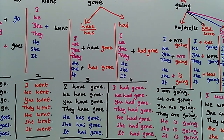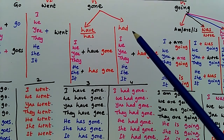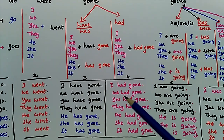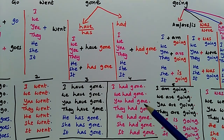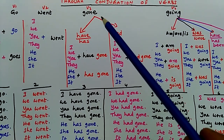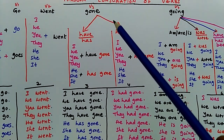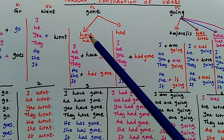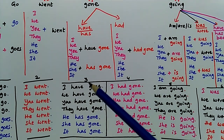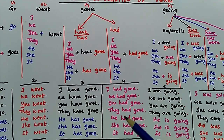For verb three 'gone': I have gone, we have gone, you have gone, they have gone, he has gone, she has gone, it has gone. And another table using had — had is the same for all pronouns: I had gone, we had gone, you had gone, they had gone, he had gone, she had gone, it had gone. If we add have or has, it is called present perfect. If we add had, it is called past perfect.